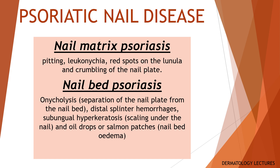Certain sites, if affected by psoriasis, can have a particularly high impact on the individual and should be given special consideration in management. These include scalp, face, hands, nails, and genitals. Nail changes appear in about half of people with psoriasis and 87% of people with psoriatic arthritis. Features of nail matrix psoriasis are pitting, leuconychia, red spots on the lunula, and crumbling of the nail plate. Features of nail bed psoriasis are onycholysis — separation of the nail plate from the nail bed — distal splinter hemorrhages, subungual hyperkeratosis (scaling under the nail), and oil drops or salmon patches.